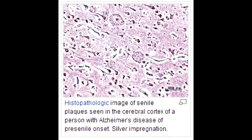What is a gross finding seen in Alzheimer's disease? The gross finding seen in Alzheimer's disease is widespread cortical atrophy. In Alzheimer's disease, there is a decrease in the synthesis of acetylcholine.